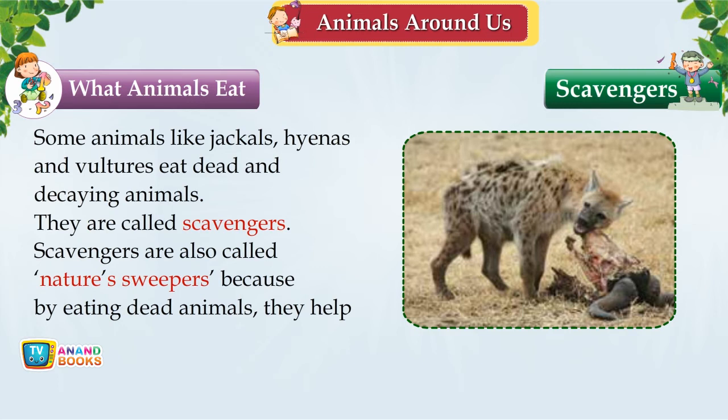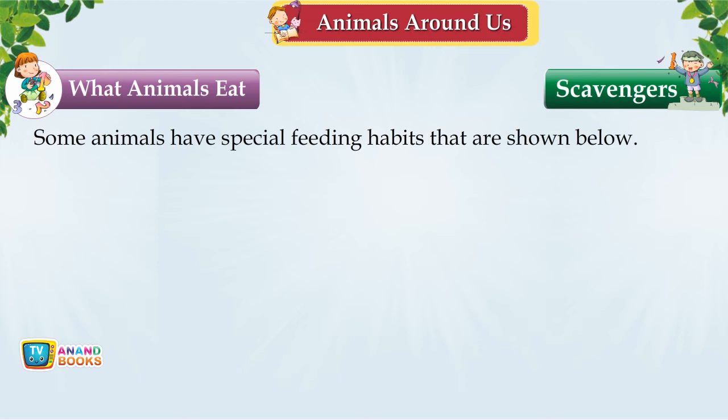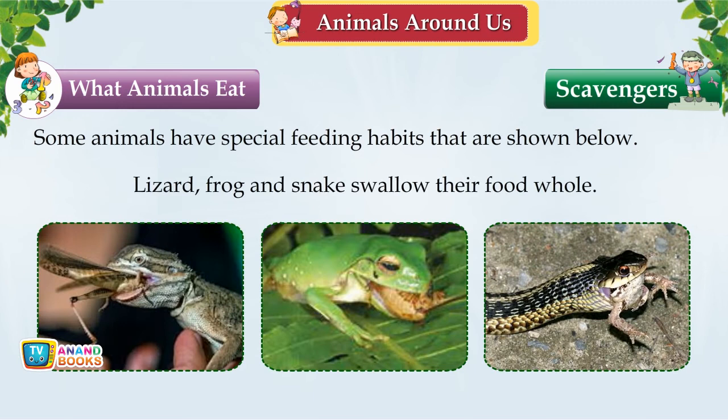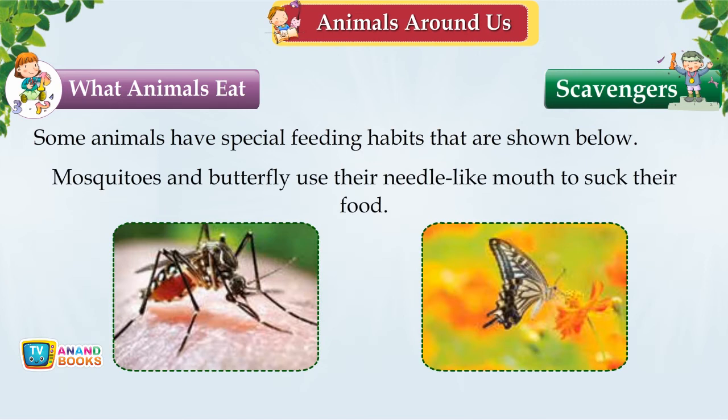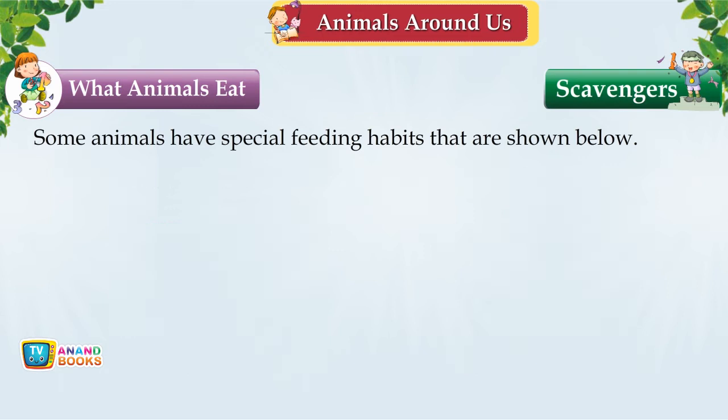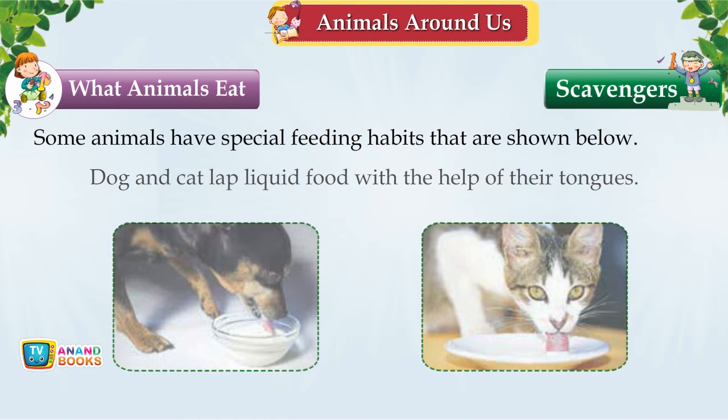Some animals have special feeding habits: lizards, frogs and snakes swallow their food whole; mosquitoes and butterflies use needle-like mouths to suck their food; dogs and cats lap liquid food with their tongues; the elephant uses its trunk to catch food and drink water.